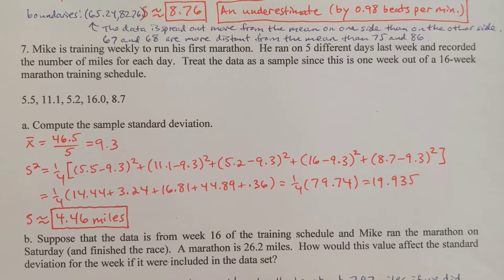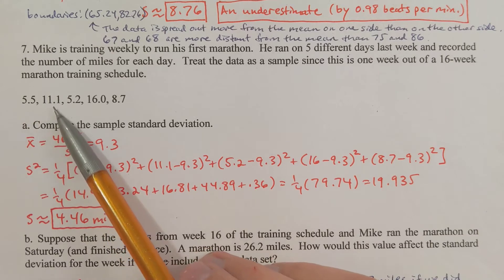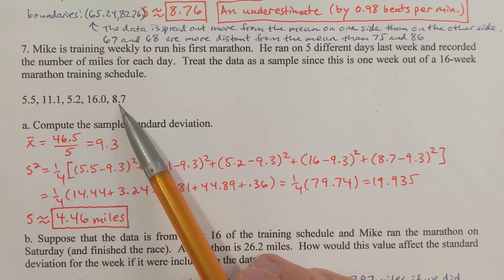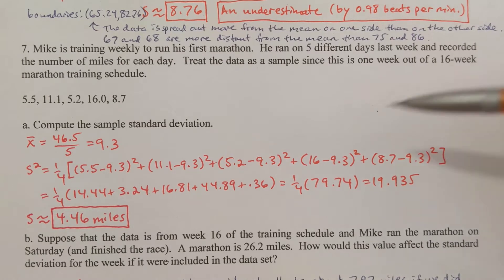We'll just get some more practice here with doing that, and then I'll show you some things in the calculator also. Problem 7: Mike is training weekly to run his first marathon. He ran five different days last week and recorded the number of miles for each day.